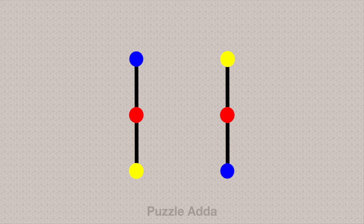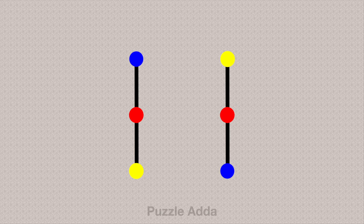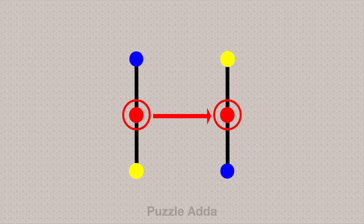What we have to do is, we have to connect the same color dots. That means we have to connect the blue dot with the blue one, the red dot with the red one, and the yellow with the yellow.